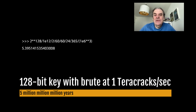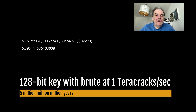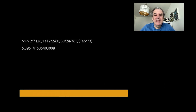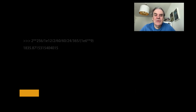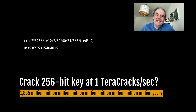The divided by 2 relates to the average time, the divided by 60 is converting from seconds to minutes, 60 again from minutes to hours, 24 is to days, and 365 is years.